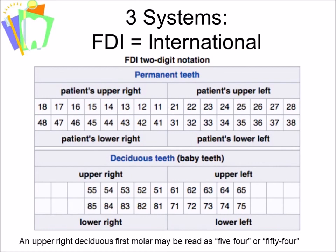In this course, if the number 14 is used, it refers to the Universal System unless stated otherwise. On a test, quiz, or lecture, we're using the Universal System of numbering — think Universal unless told otherwise.